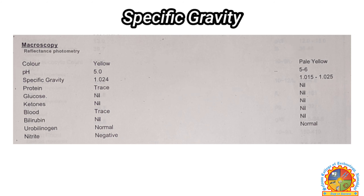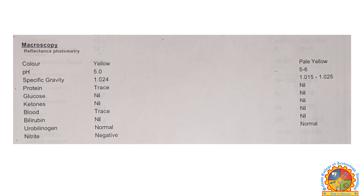Next, specific gravity. Specific gravity is equal to the density of urine divided by the density of water. If specific gravity is less than 1.015, it indicates excessive hydration, and if it exceeds 1.025, it indicates dehydration.